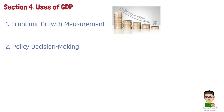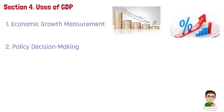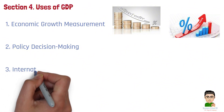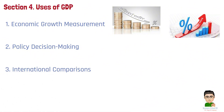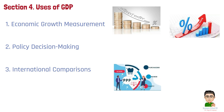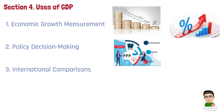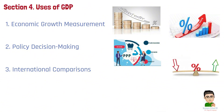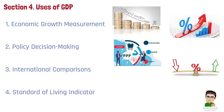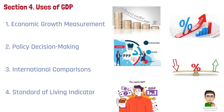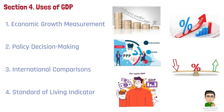Conversely, if the economy is overheating, they may raise rates to control inflation. Number 3: International Comparisons — GDP allows comparisons between the economic performances of different countries. Adjusting GDP figures using Purchasing Power Parity or exchange rates helps to assess the relative size and wealth of economies around the world. Number 4: Standard of Living Indicator — Although imperfect, GDP per capita is often used as an indicator of the average standard of living in a country, providing insight into how wealthy or poor a country is, on average.